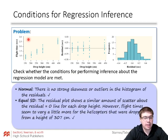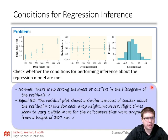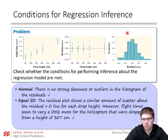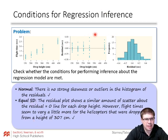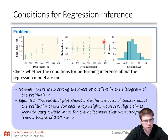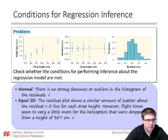For normal: there is no strong skewness or outliers in the histogram of the residuals — we took a graph of all the residuals and it looks really good. For equal standard deviation: coming back to the residual plot, it gets a bit bigger in the middle but we don't see spreading or converging — the residuals are kind of evenly spread across, so that looks good.